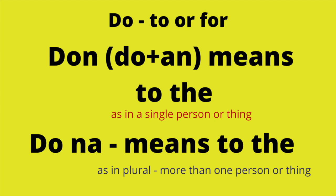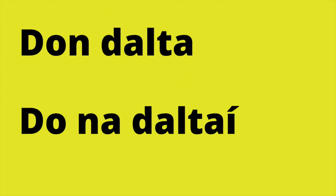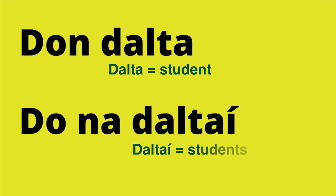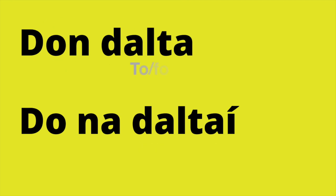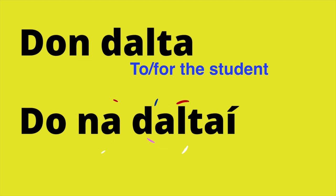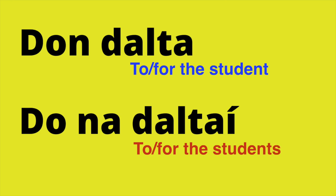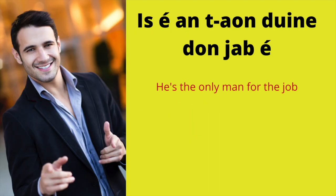Let's look at some example sentences. 'Dalta' is a student and 'daltaí' is students — 'daltaí' is the plural of 'dalta'. So we would say 'don dalta' — that's 'to the student', singular — or 'do na daltaí' means 'to the' or 'for the students', plural. One is singular, one is plural.